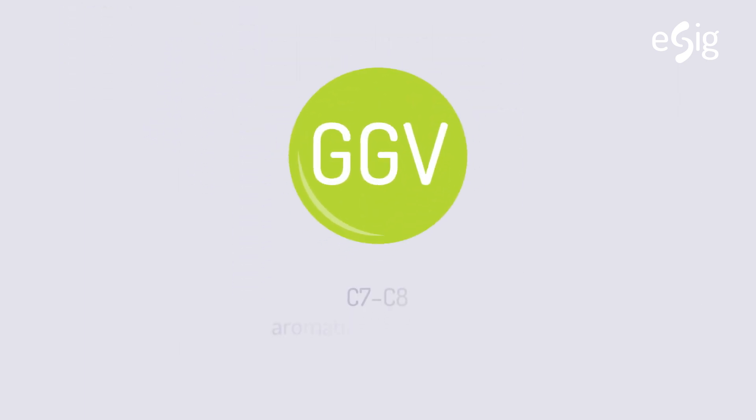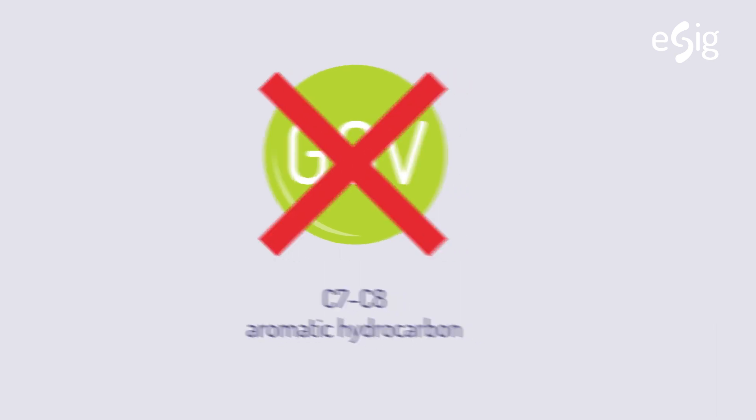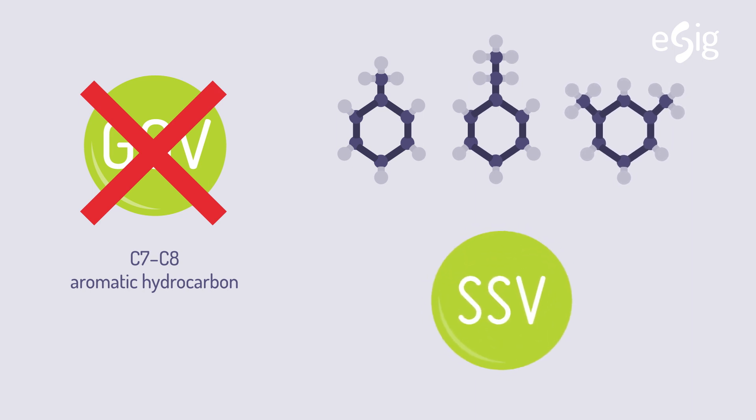A C7 to C8 aromatic hydrocarbon GGV has not been developed because toluene, ethylbenzene and xylene must use SSVs, which are their respective OELs.